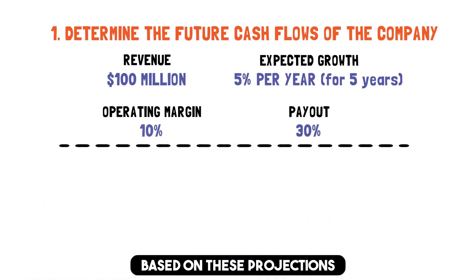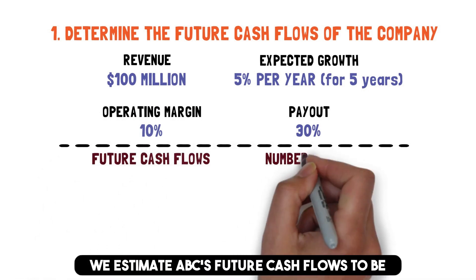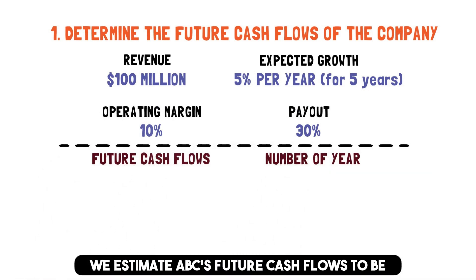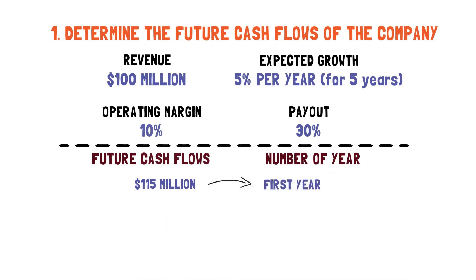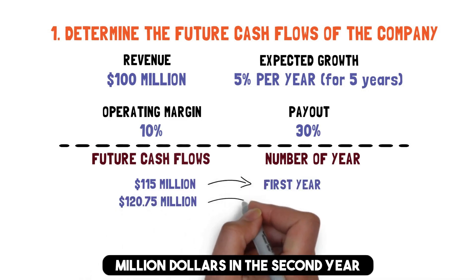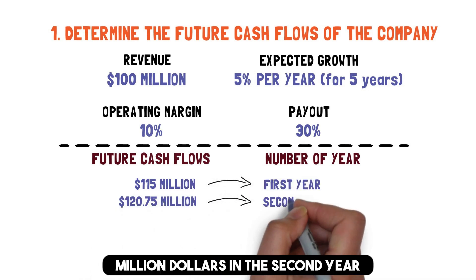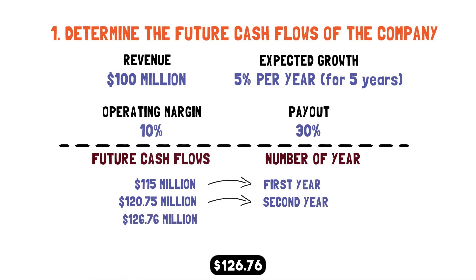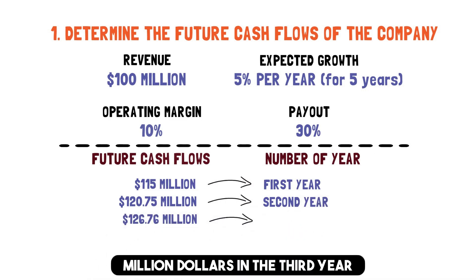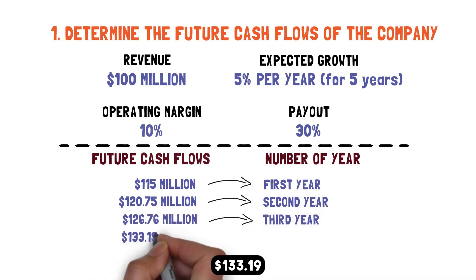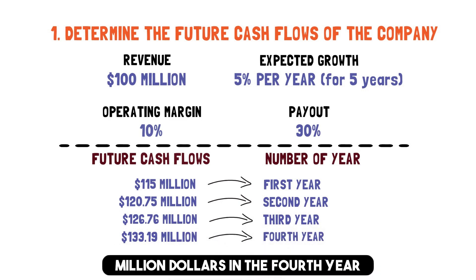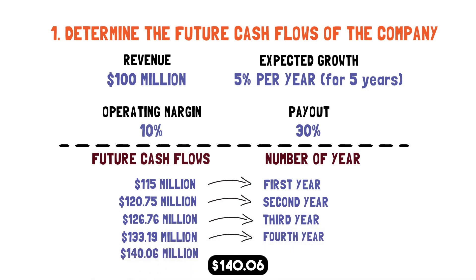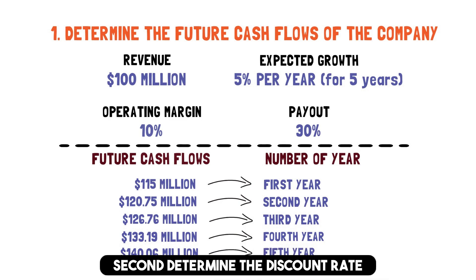Based on these projections, we estimate ABC's future cash flows to be $115 million in the first year, $120.75 million in the second year, $126.76 million in the third year, $133.19 million in the fourth year, and $140.06 million in the fifth year.